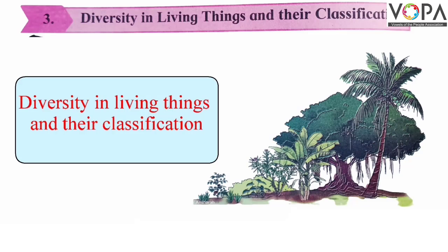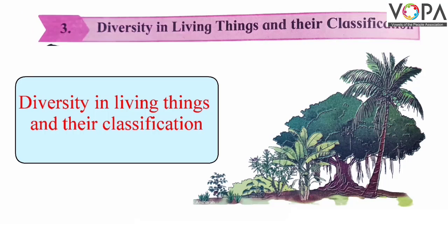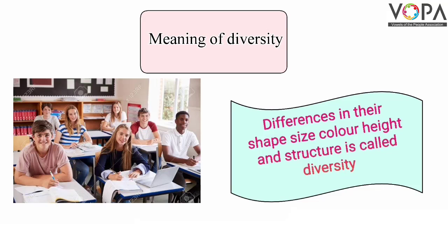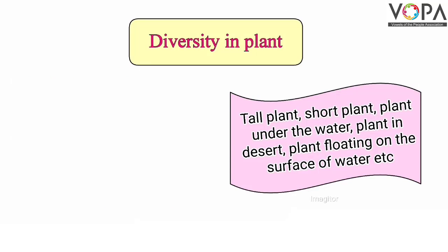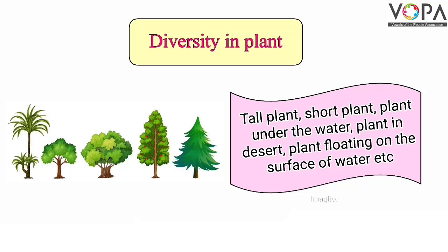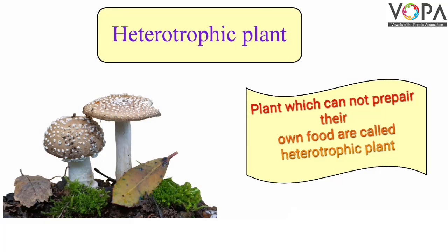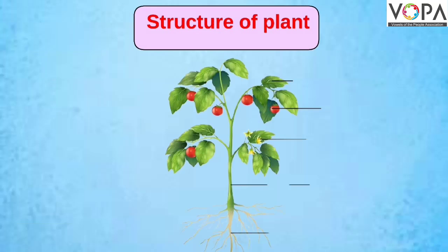Hello students, today we are going to learn the next part of the lesson: diversity in living things and their classification. In the previous video, we studied the meaning of diversity, diversity in plants, autotrophic plants, and heterotrophic plants. Now let us learn the structure of a plant.